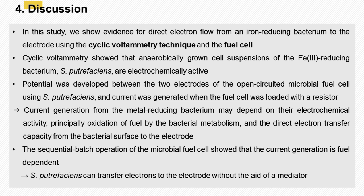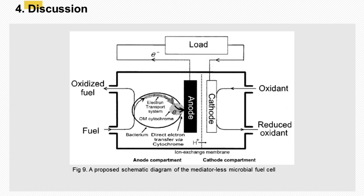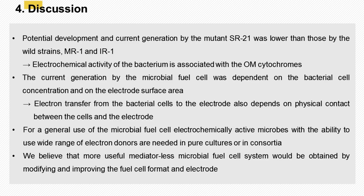The sequential batch operation of the microbial fuel cell showed that the current generation is fuel-dependent. These results show that S. putrefaciens can transfer electrons to the electrode without the aid of a mediator. A proposed schematic diagram of the electron flow in the mediator-less microbial fuel cell system is presented in Figure 9. The electrochemical activity is believed to be due to direct electron transfer from electron carriers located on the cell surface, possibly outer membrane cytochromes, to the electrode. Potential development and current generation by the mutant strain SR21 was lower than those by the wild strains MR1 and IR1. These results suggest the electrochemical activity of the bacterium is associated with the outer membrane cytochromes rather than the ferric reductase. The current generation by the microbial fuel cell was dependent on the bacterial cell concentration and on the electrode surface area, suggesting that electron transfer also depends on physical contact between the cells and the electrode.